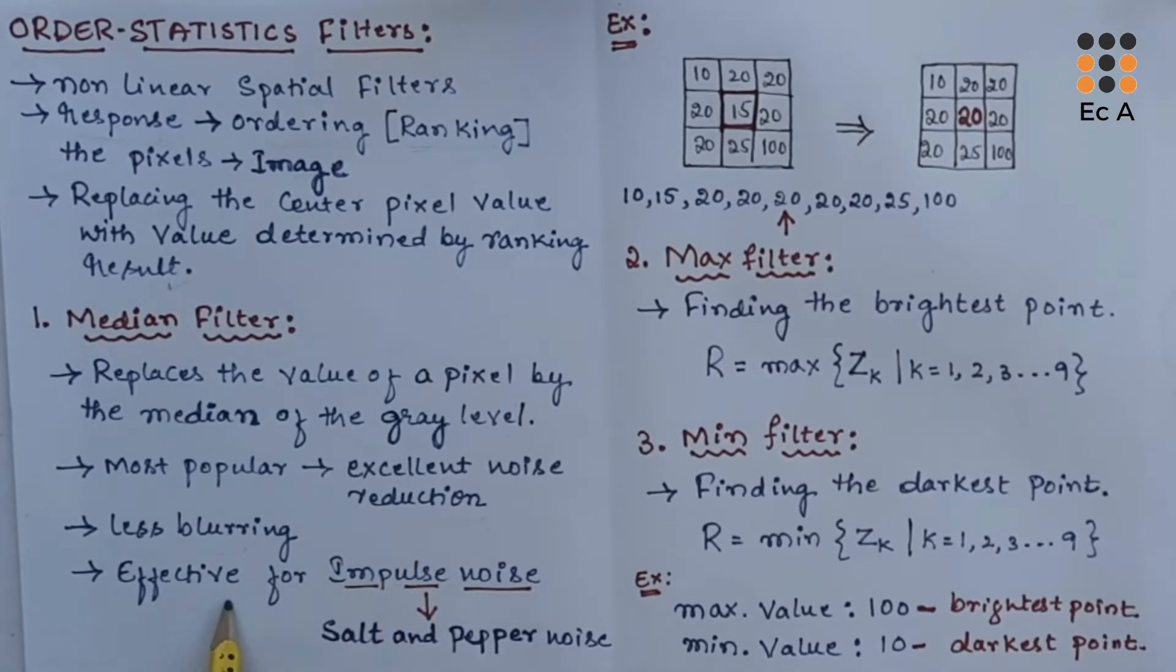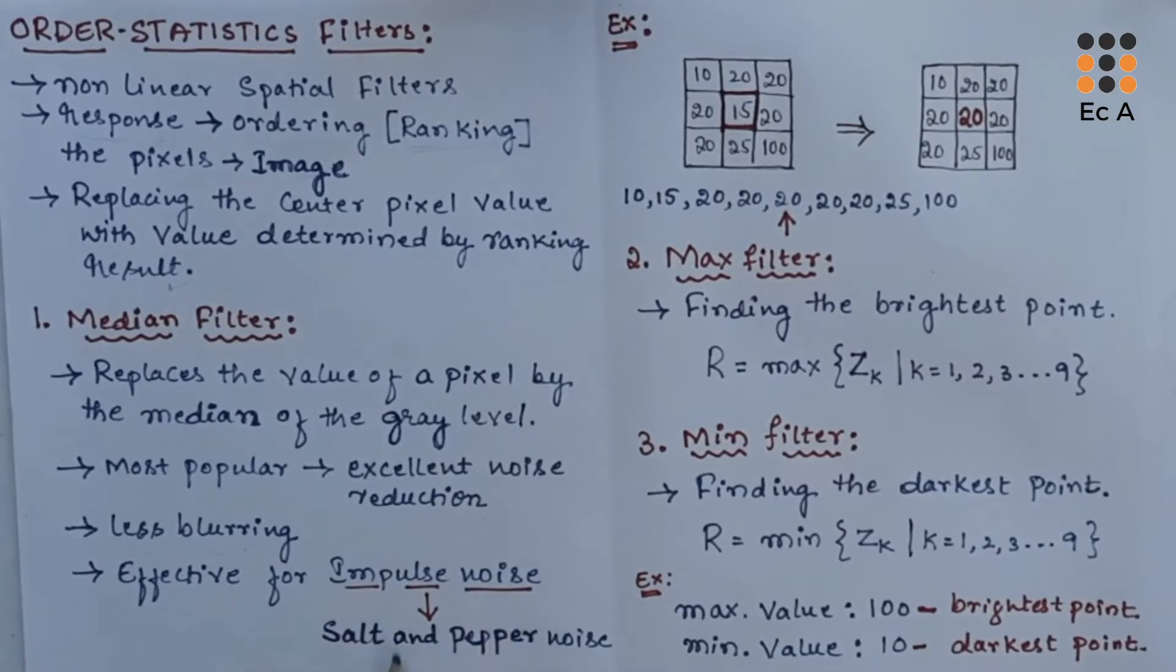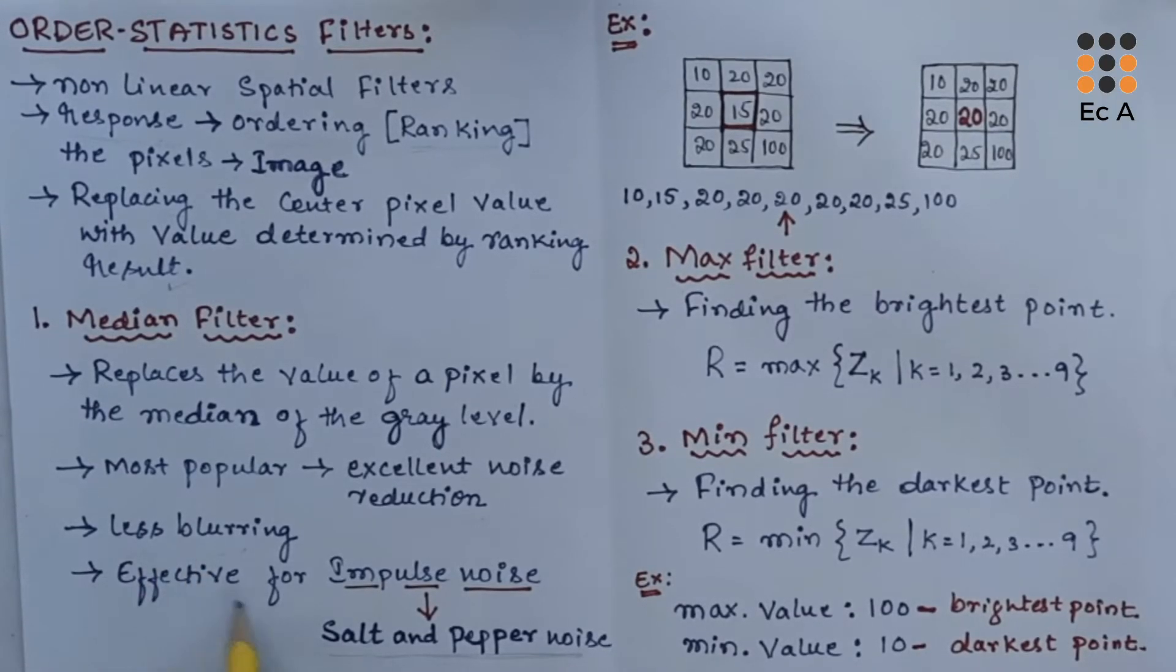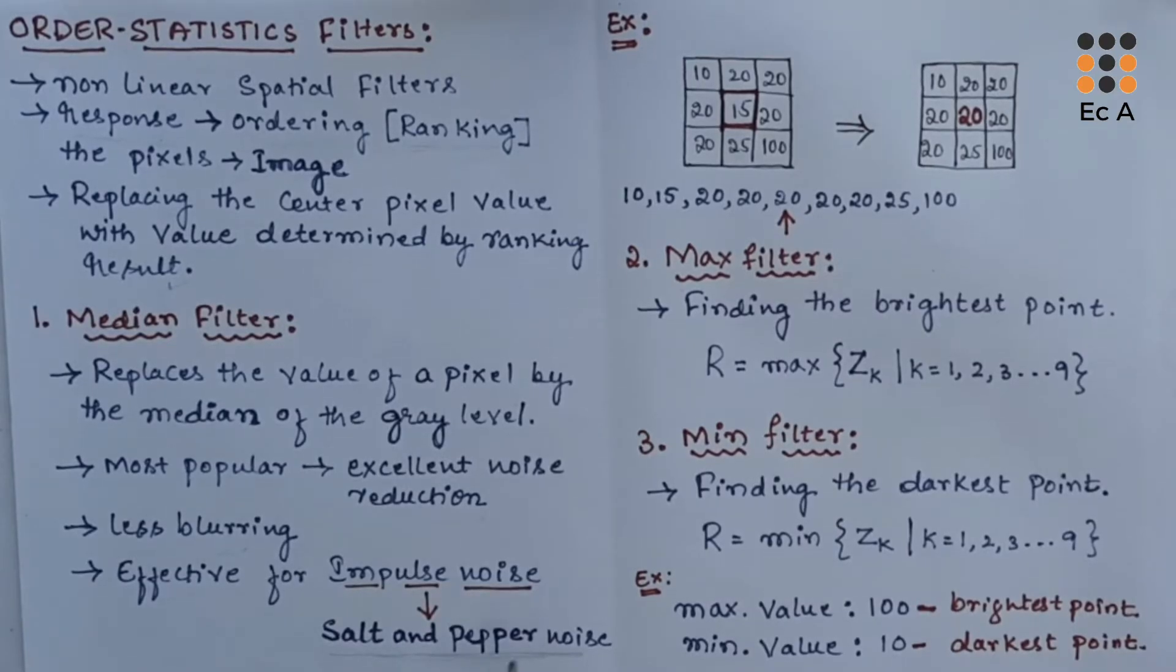The median filters are practically effective for impulse noise. This impulse noise is also known as salt and pepper noise. So this median filter is most effective for salt and pepper noise. We call the noise salt and pepper because it has the appearance of white and black dots on the image.